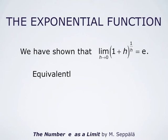Equally, this can be written as the limit as n approaches infinity of (1 plus 1 over n) to the power n, equals e. This is the formula that Euler got.